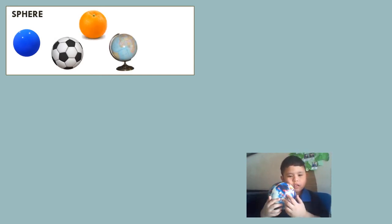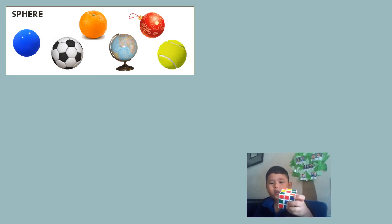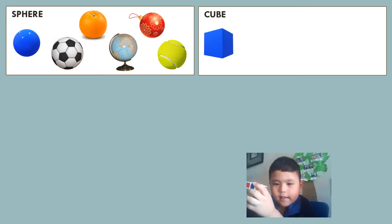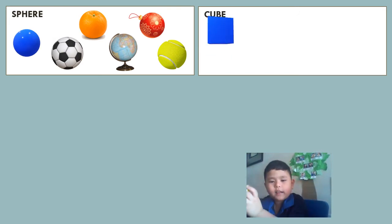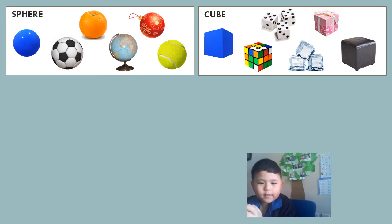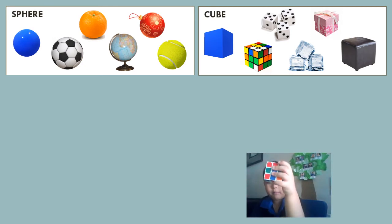The next 3D shape is a cube. It is like six square flat faces all bounded together. Examples of the cube are the dice, ice cube, Rubik's cube, and this gift box.